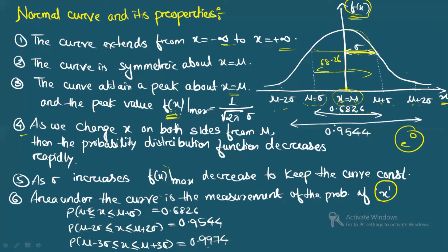To summarize the properties: the normal curve extends from −∞ to +∞, is symmetric about x = μ, has a peak value of 1 / √(2π σ), is unimodal, f(x) decreases rapidly as x moves away from μ, f_max decreases as σ increases, and the area under the curve gives probability. Using these properties we will solve one question.